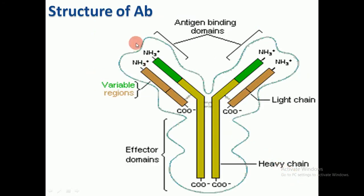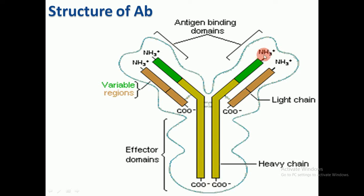The structure of the antibody consists of two heavy polypeptide chains and two light polypeptide chains. The light chain is shown in brown and the heavy chain in green. Each polypeptide chain has an N-terminal region and a carboxy-terminal region, for both the heavy chain and the light chain.